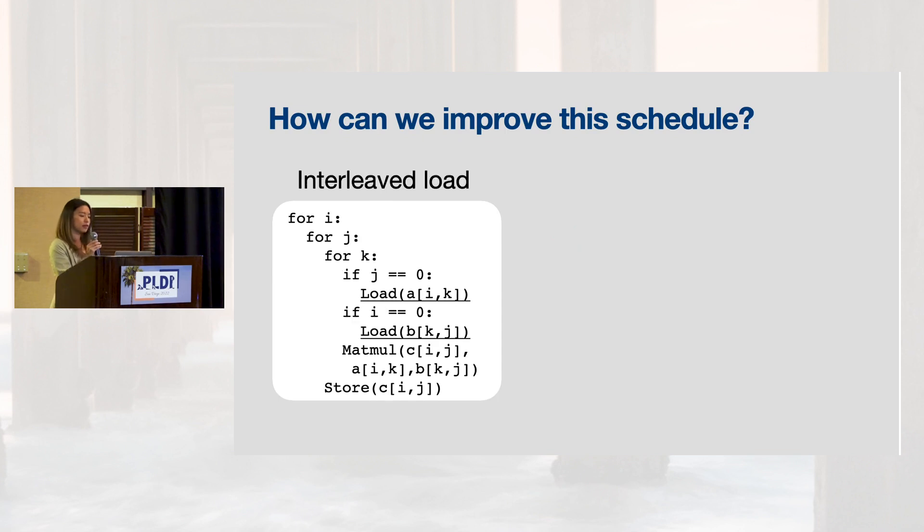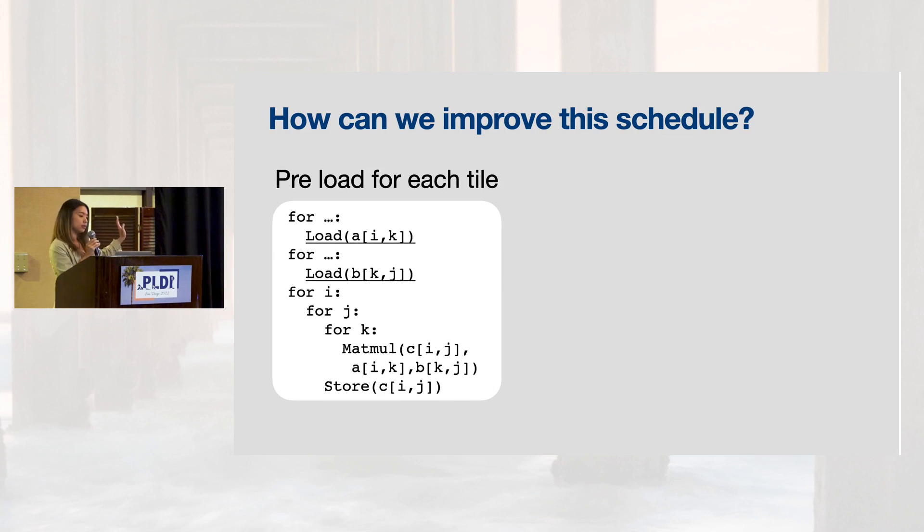Let's add a guard around the load instruction. This schedule is better because it doesn't have redundant loads, but instead, it has two if statements in the innermost loop, which is generally a bad idea because it causes branch mispredictions. So how can we improve this? We can get rid of if statements by hoisting the load instructions out of the main loop. So this is preloading all inputs before Matmul. This looks good, and are we done with optimizing? Let's find out.